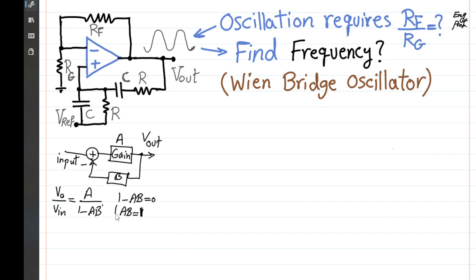AB = 1 reminds us that from the output, through the feedback and then through the gain back to the output, we should arrive at the same output — a sustainable operation without any input in the circuit. To get that, let's start from Vout. We have a voltage division between a series RC combination and a parallel RC combination.